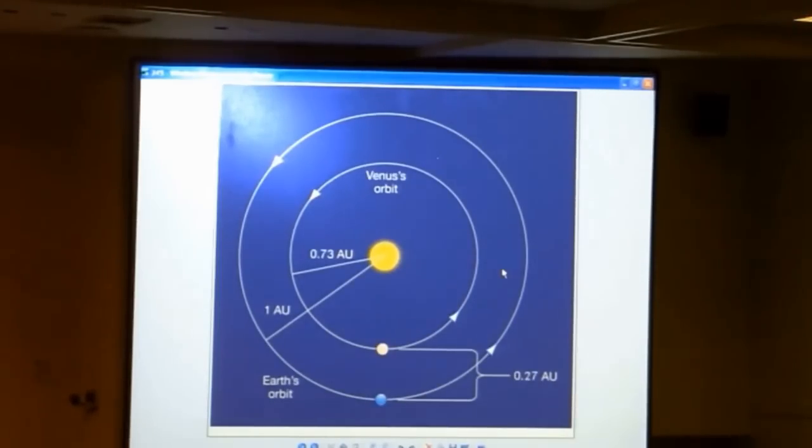And so, sometimes Venus is very far away from us, sometimes it's close. Here it is at closest approach, and at closest approach, it's 1 AU minus 0.73 AU, so 0.27 AU. At different positions in its orbit, it'll be different numbers of AU, but let's consider this configuration, because it's kind of the easiest to deal with mathematically.